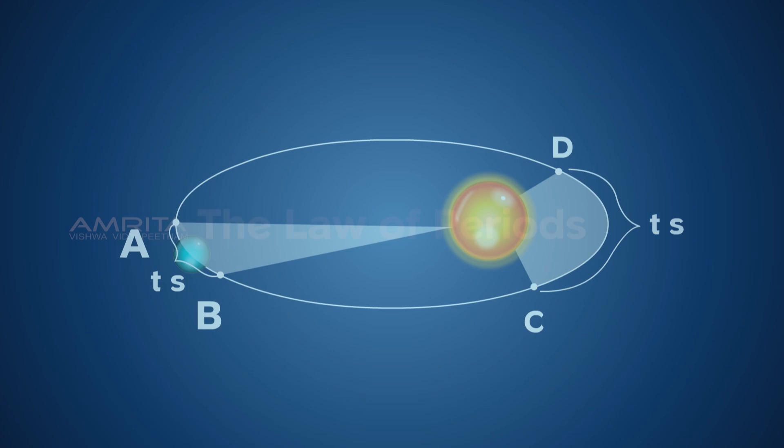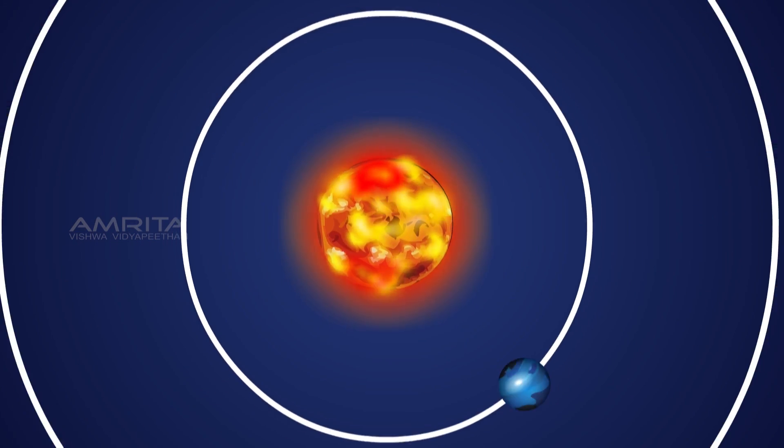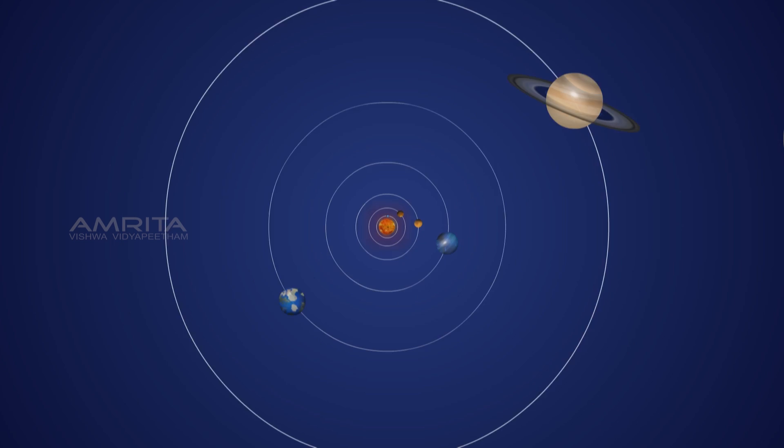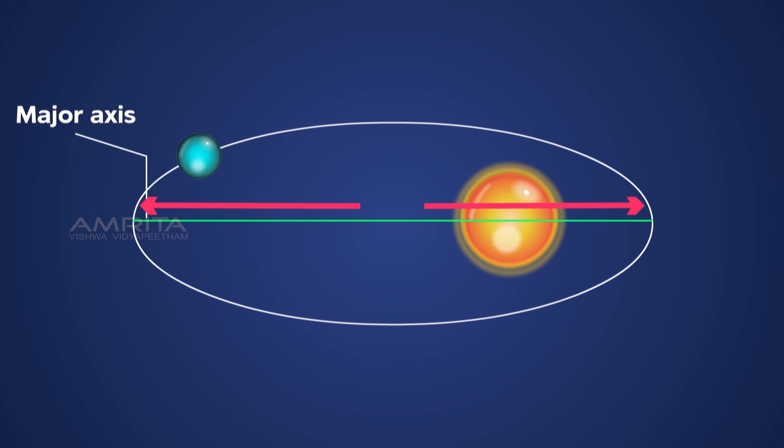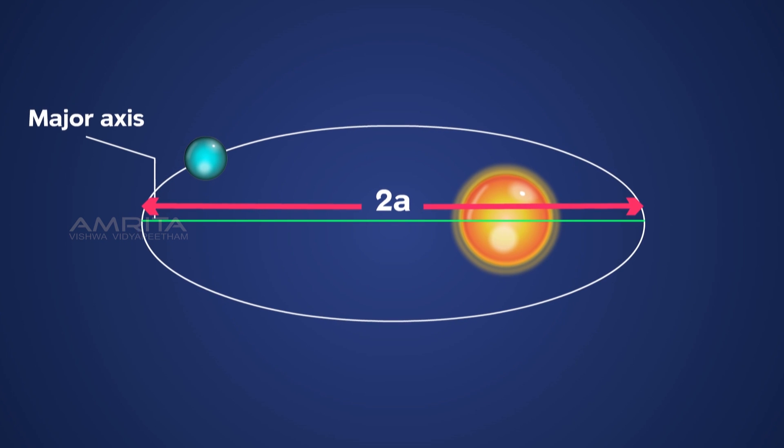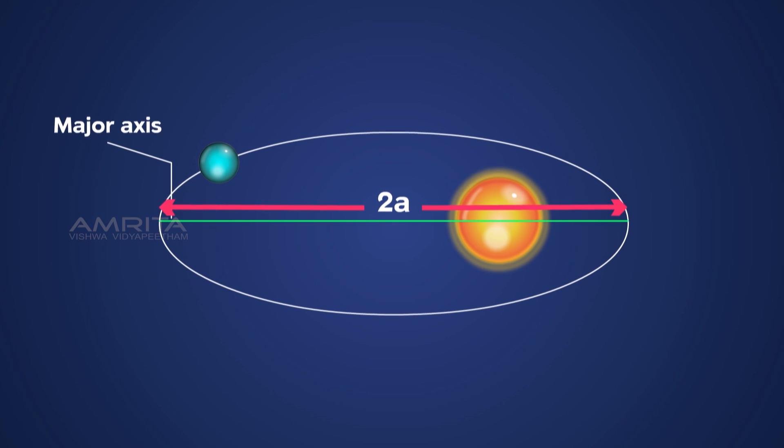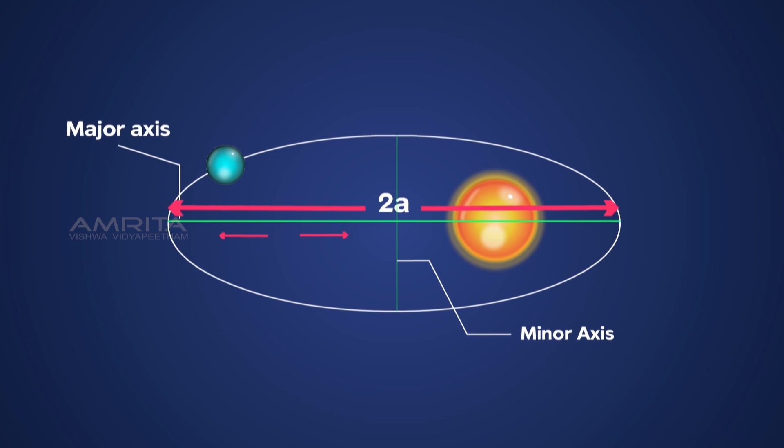The third is the law of periods. The square of the period of any planet about the sun is proportional to the cube of the semi-major axis of its orbit. The length of the major axis is 2a. The distance between the point of intersection of semi-major axis on major axis to the orbit is a.